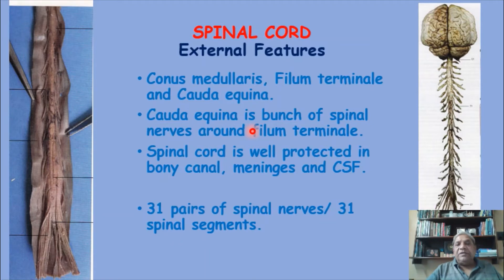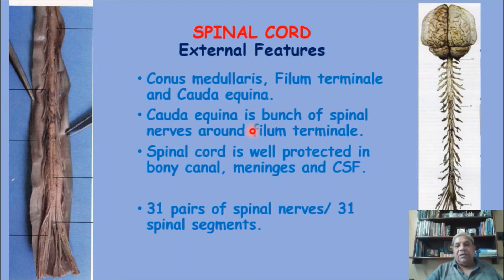There are 31 pairs of spinal nerves coming out from the spinal segments, making 31 spinal segments in total: 8 cervical, 12 thoracic, 5 lumbar, 5 sacral, and 1 coccygeal. The spinal nerves have a special arrangement - an anterior root and posterior root which forms the trunk, then divides into anterior or ventral rami and dorsal or posterior rami. That will be covered in the next video on spinal nerves.